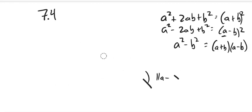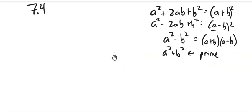Sum of squares, if I'm adding squares together, that is actually not factorable. That's prime. So be careful to tell the difference. The difference of squares is the one that's factorable. The sum of squares is prime.